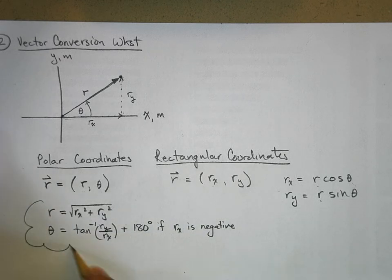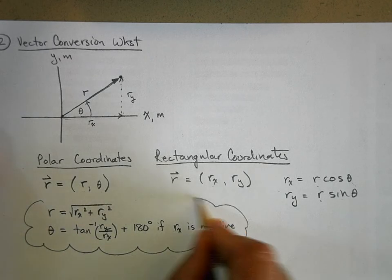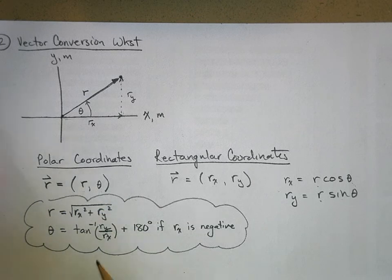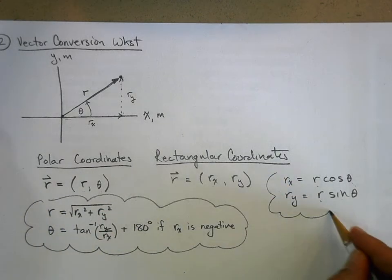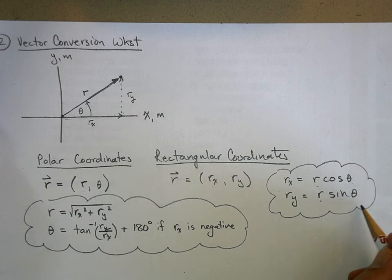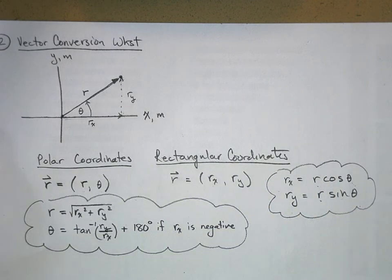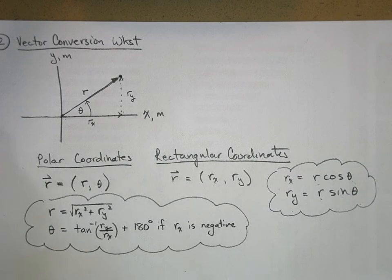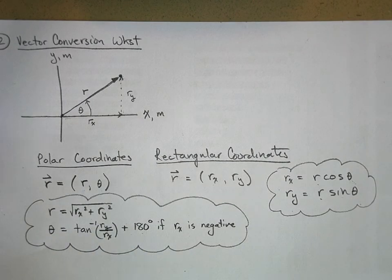So, this is what you need to go from rectangular to polar. This is what you need to go from polar to rectangular. And what I'm going to show you in the next video is why do we have to add 180 degrees if r sub x is negative.